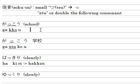Let me try: G-A, K-K-O — then it appears small っ and こ — and U. がっこう.